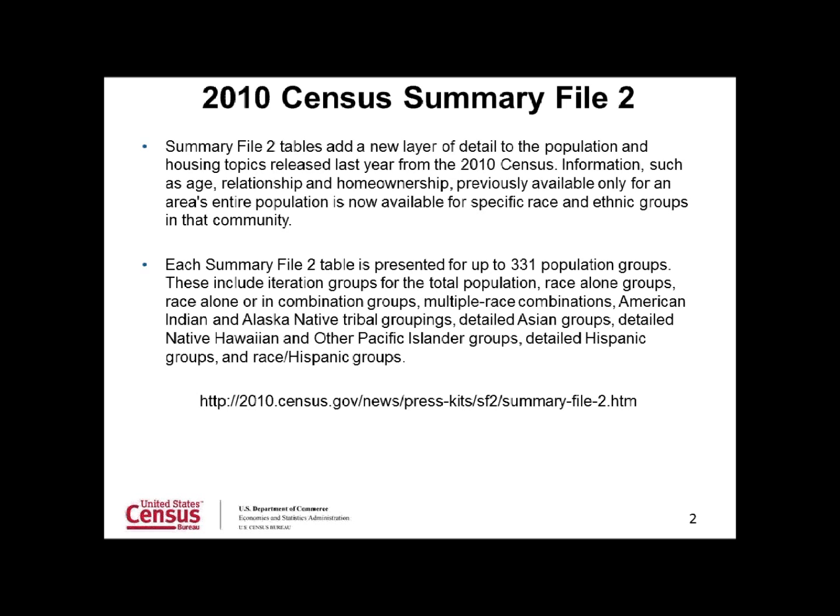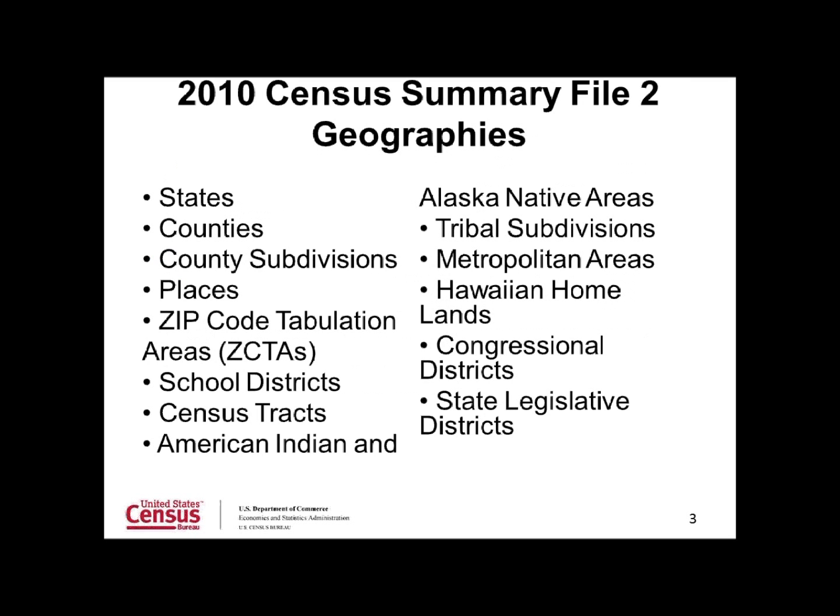This past April, the Census Bureau released Summary File 2 tables, which provide demographic information such as age, relationship, and homeownership iterated by specific race and ethnic groups at various levels of geography. Summary File 2 provides users with population counts at numerous geographic levels ranging from states, counties, places, census tracts, and American Indian and Alaska Native areas.